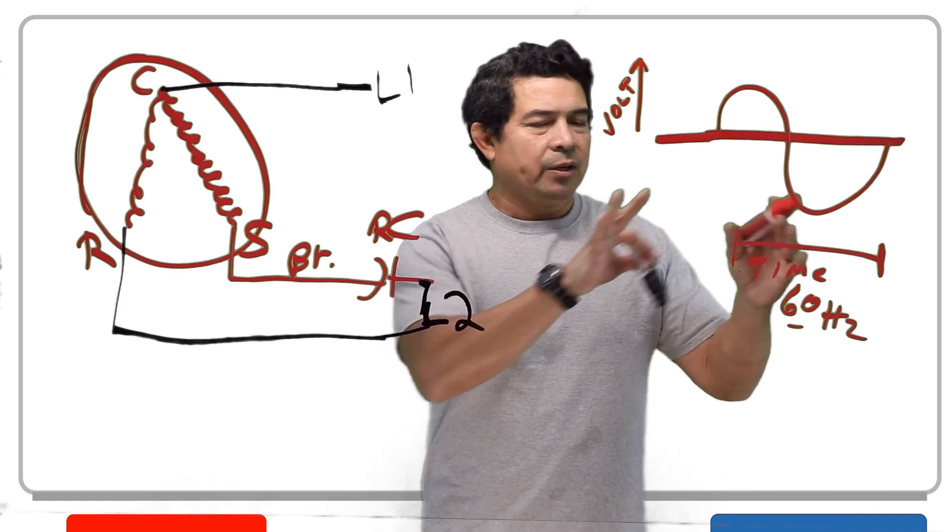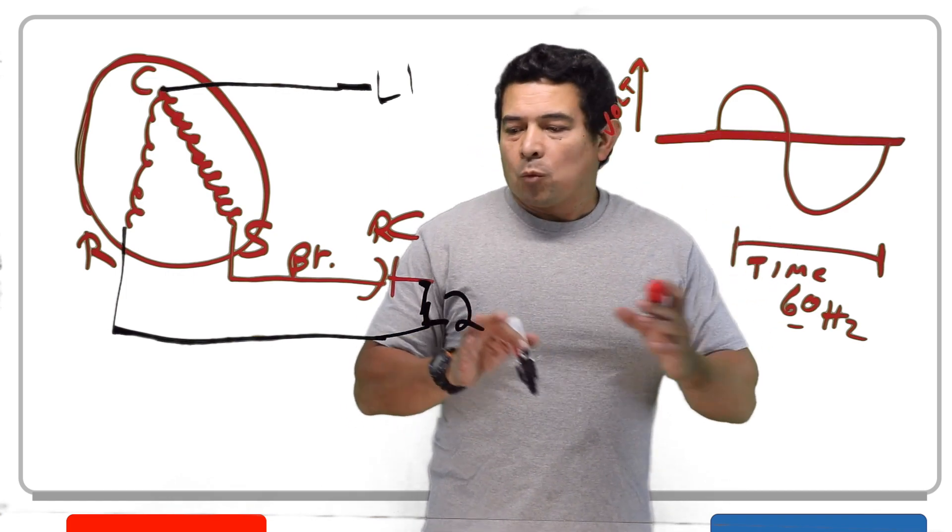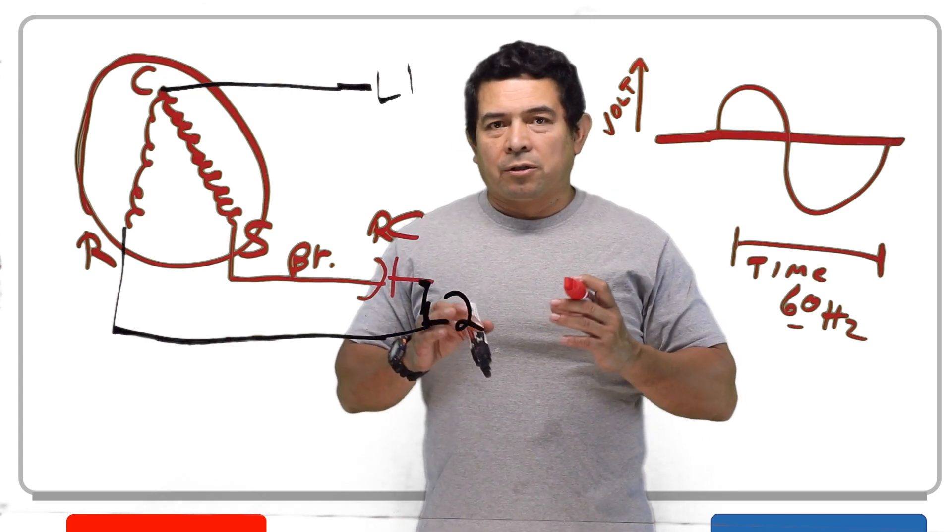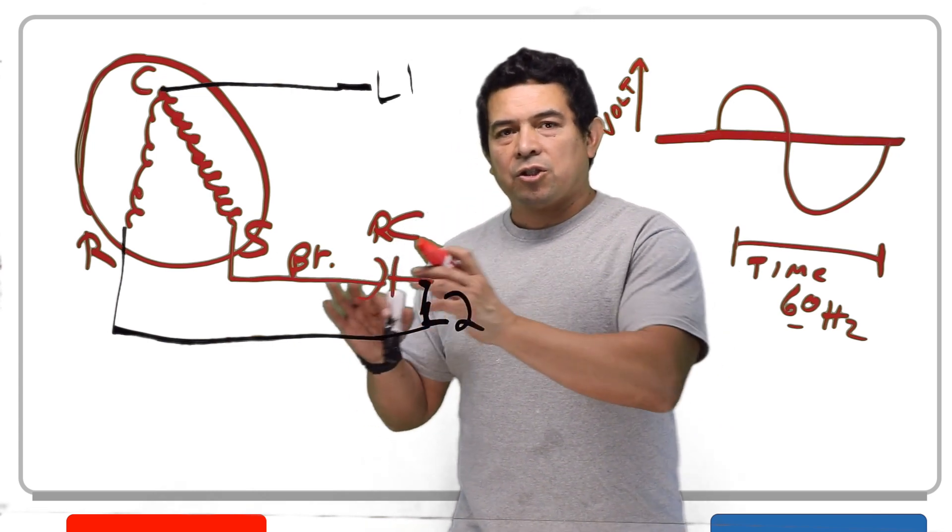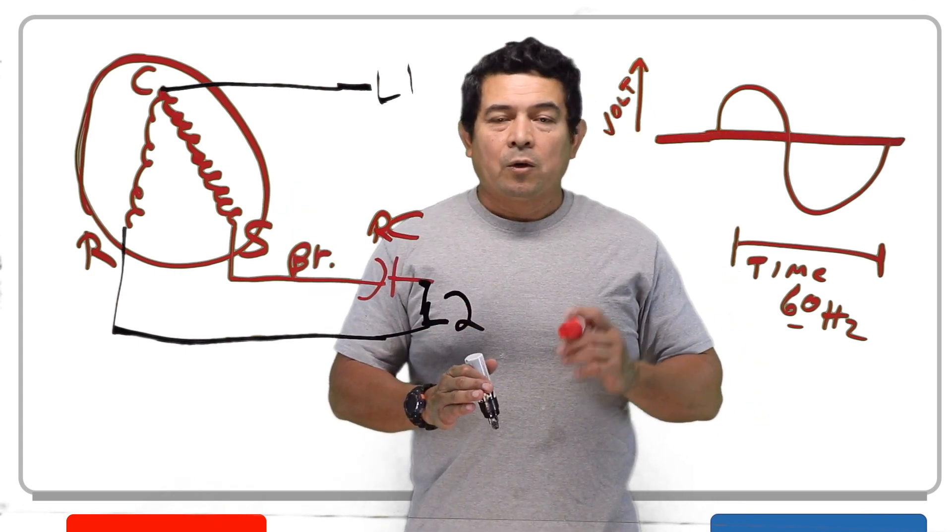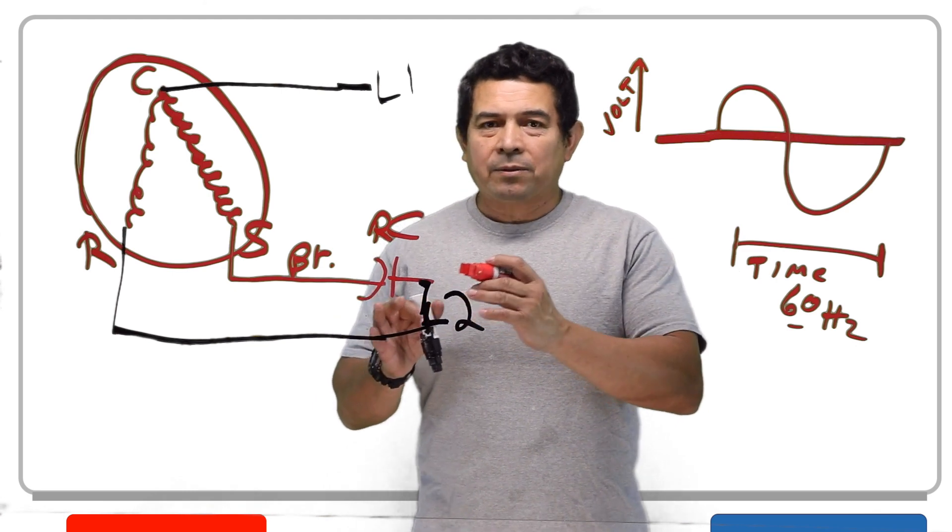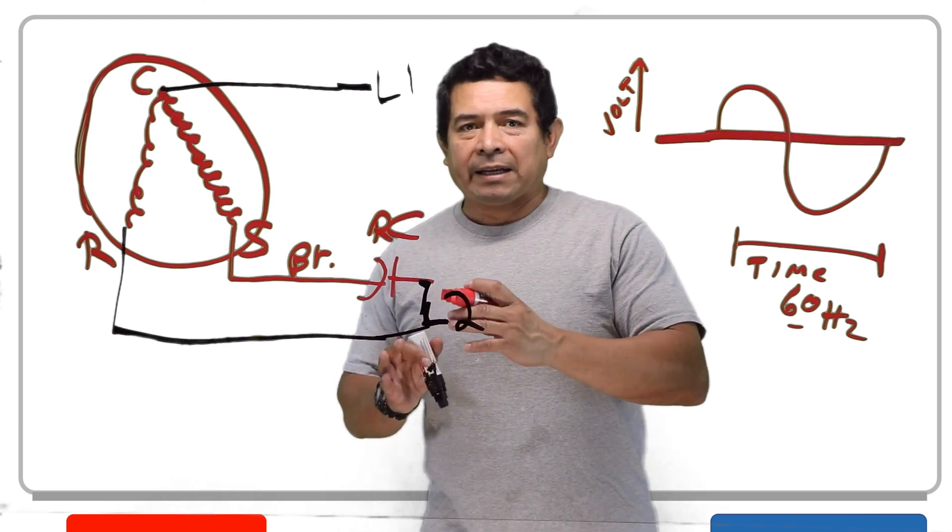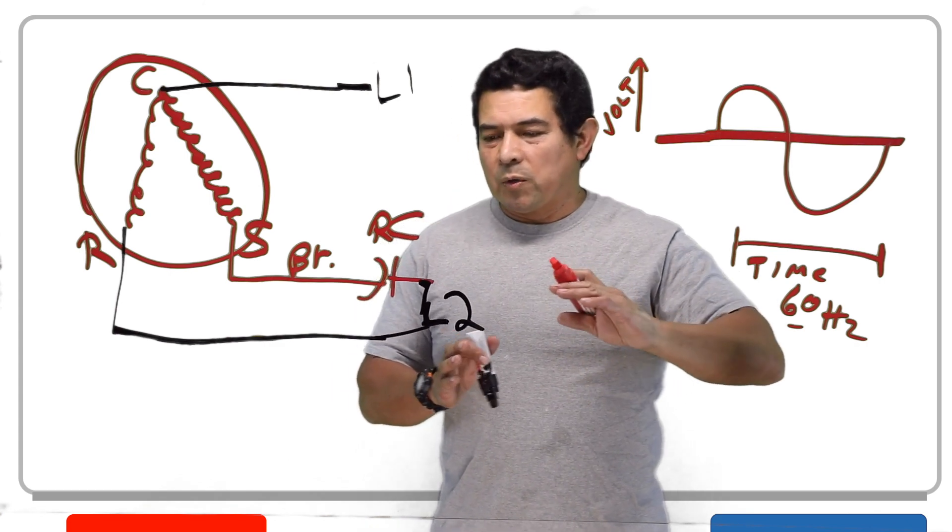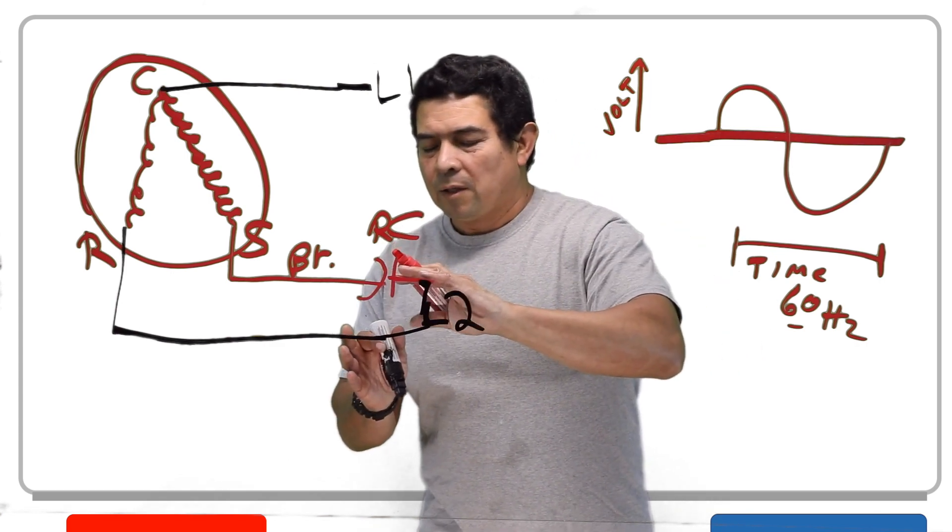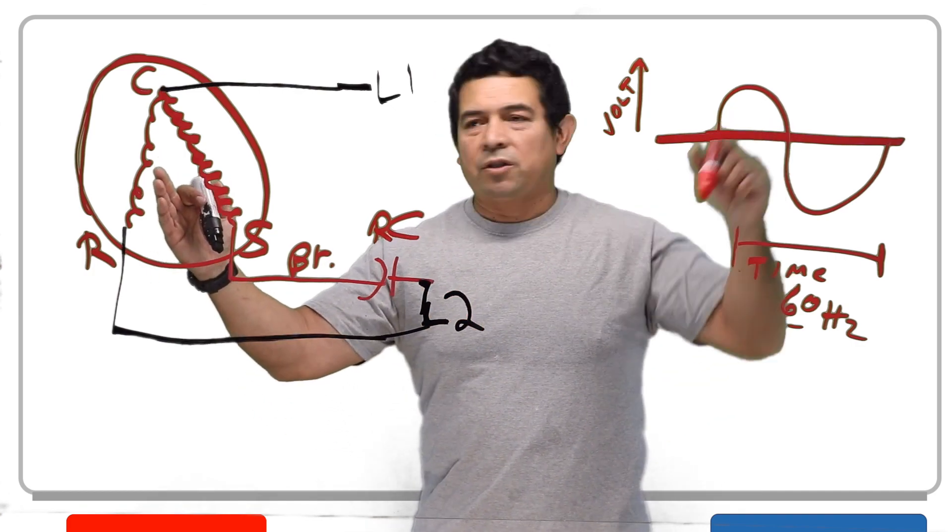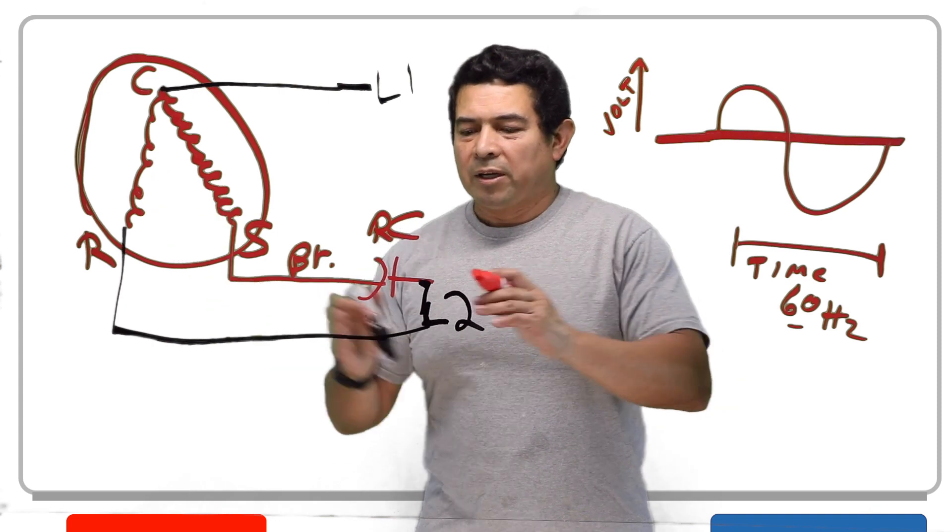So why do we need a capacitor and what is the purpose of all of this? Well, the capacitor, it stores and discharges the charge. It's going to store energy and then it's going to discharge the energy and it's going to send it over to my start winding. When this happens, the capacitor makes the current lag some. In other words, what it does is it creates a little time delay.